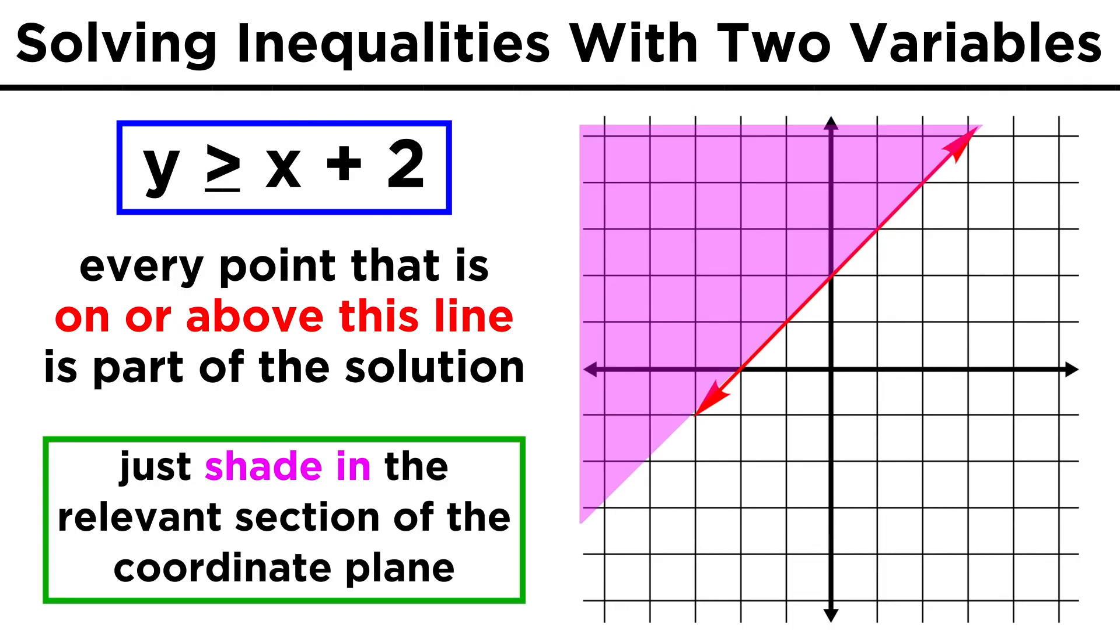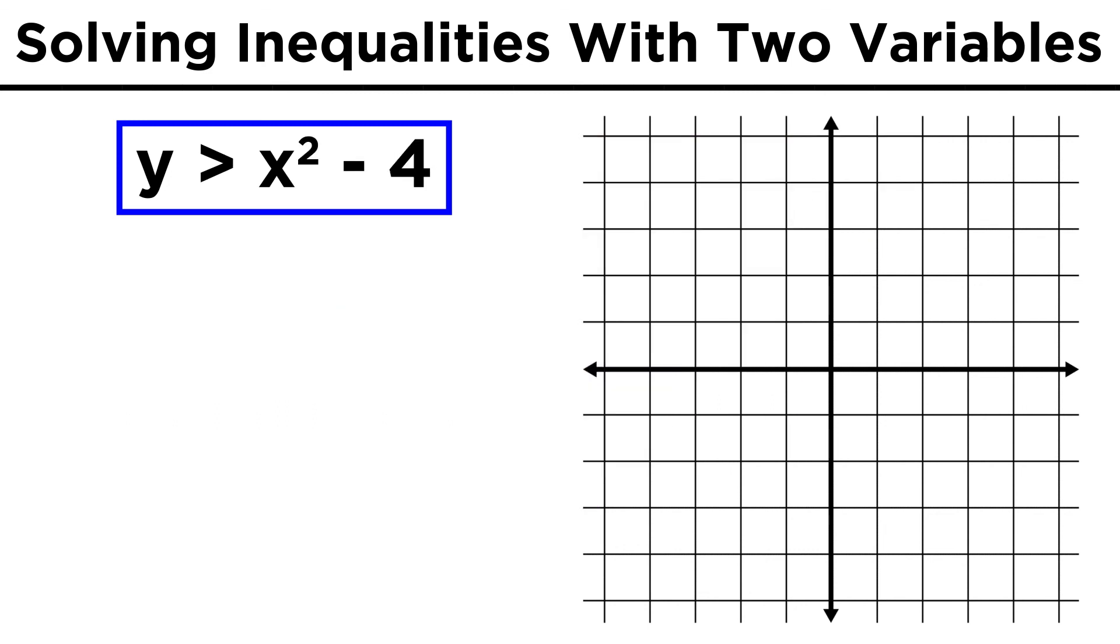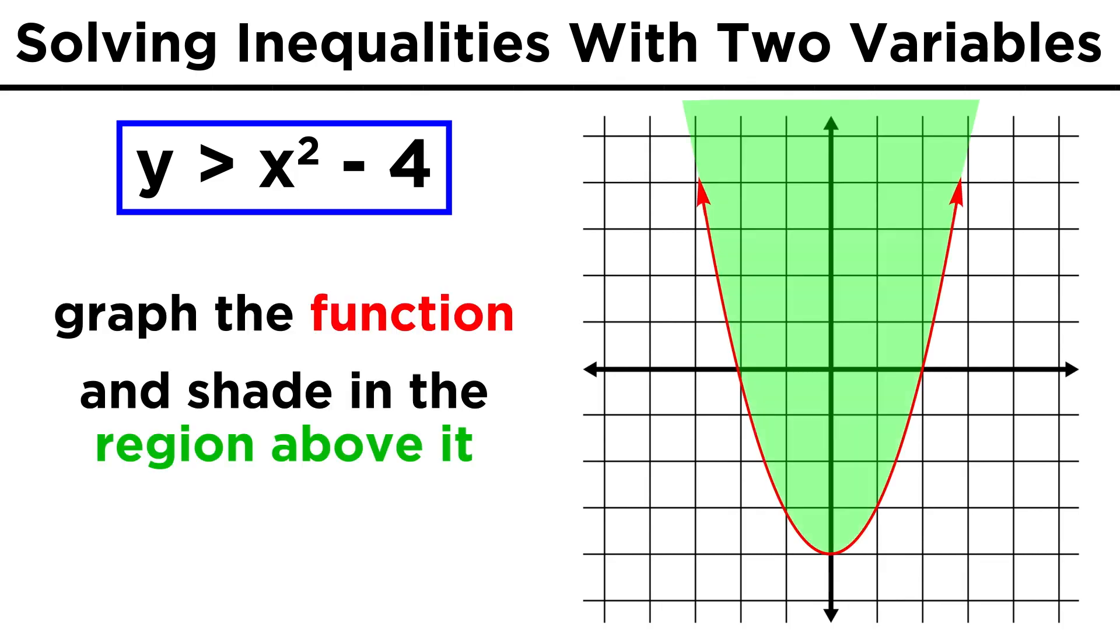We would denote this by shading in this section of the coordinate plane, implying that everything above this line is a solution to the inequality. We can do the same thing for y is greater than x squared minus four. We just graph the function and shade in everything above it, or the section containing points with y values that are greater than the y value for the point on the function directly below.